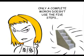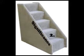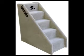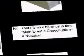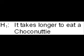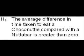She decides to follow the five steps: hypotheses, significance, sample, p-value, decide. The null hypothesis is that there is no difference in time taken to eat a Choconutty or a Nutter Bar — the null hypothesis is the thing she is attempting to prove wrong. The alternative hypothesis is that it takes longer to eat a Choconutty, or more rigorously, that the average difference in time taken to eat a Choconutty compared with a Nutter Bar is greater than zero.